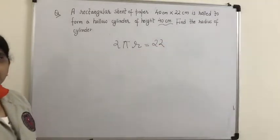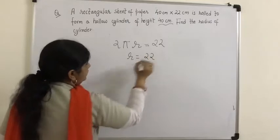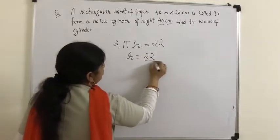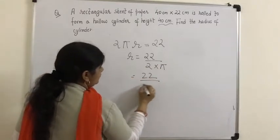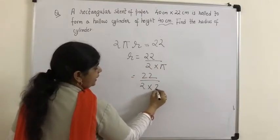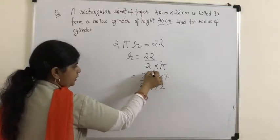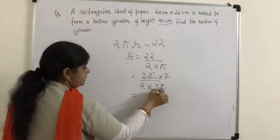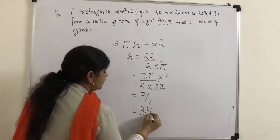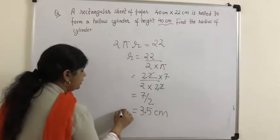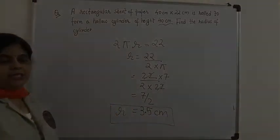We need to find the radius r. So r = 22 ÷ (2π) = 22 ÷ (2 × 22/7). The 22s cancel, leaving 7/2 = 3.5 cm. So the radius of the base of the cylinder is 3.5 centimeters.